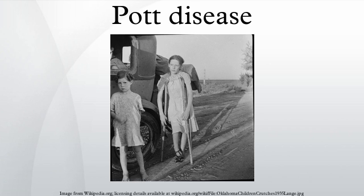Pott's disease results from hematogenous spread of tuberculosis from other sites, often pulmonary. The infection then spreads from two adjacent vertebrae into the adjoining intervertebral disc space. If only one vertebra is affected, the disc is normal.